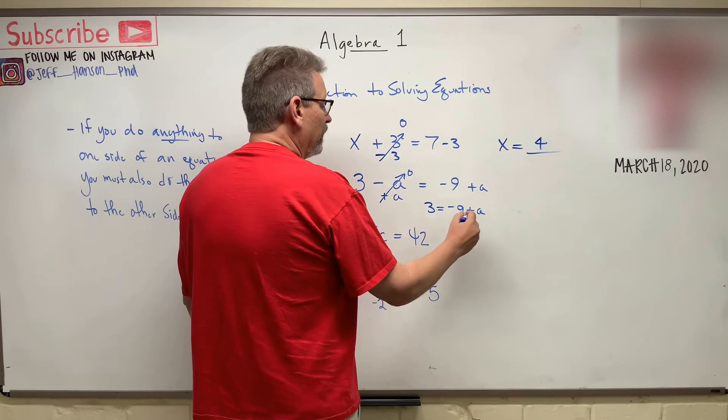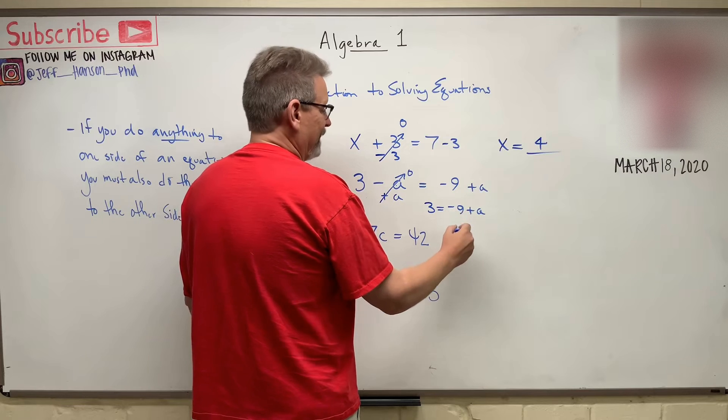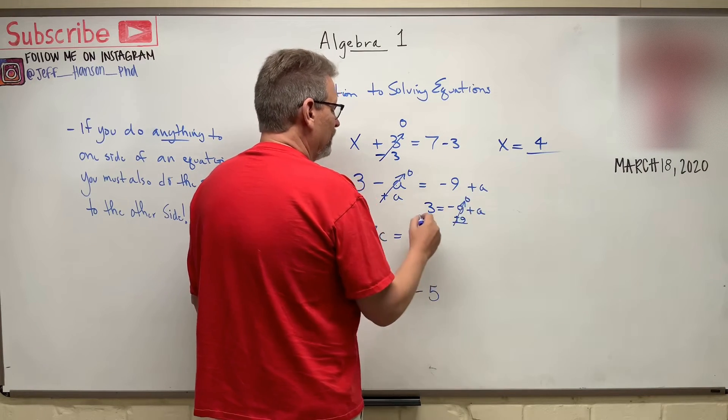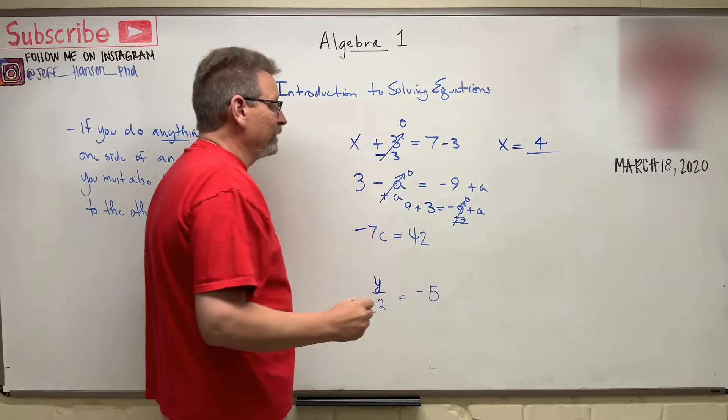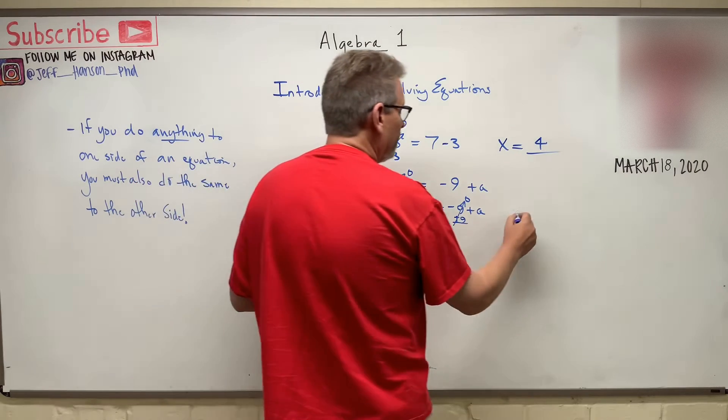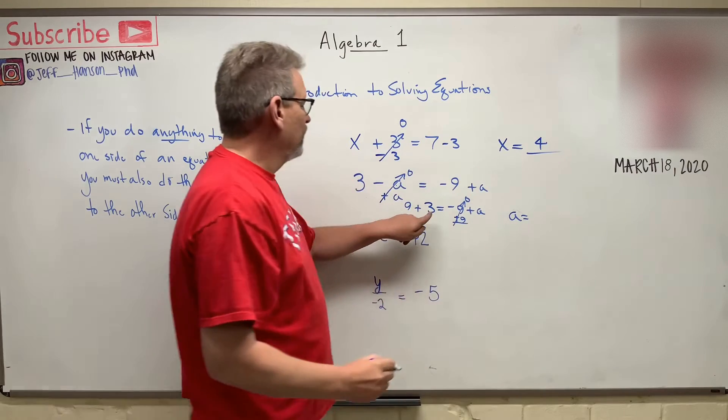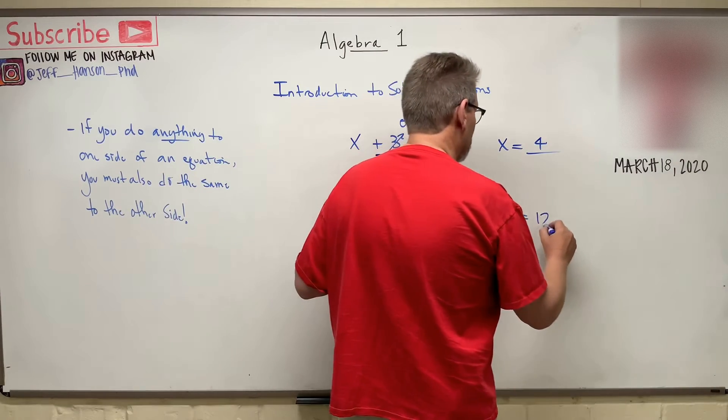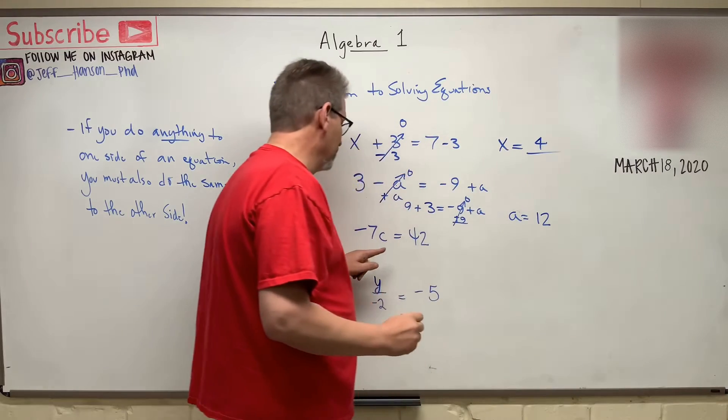So how do I get rid of a minus nine? Well, you add nine to each side. That'll go to zero. And then I'll add nine to this side. So A is equal to three plus nine, which is twelve. Nice.